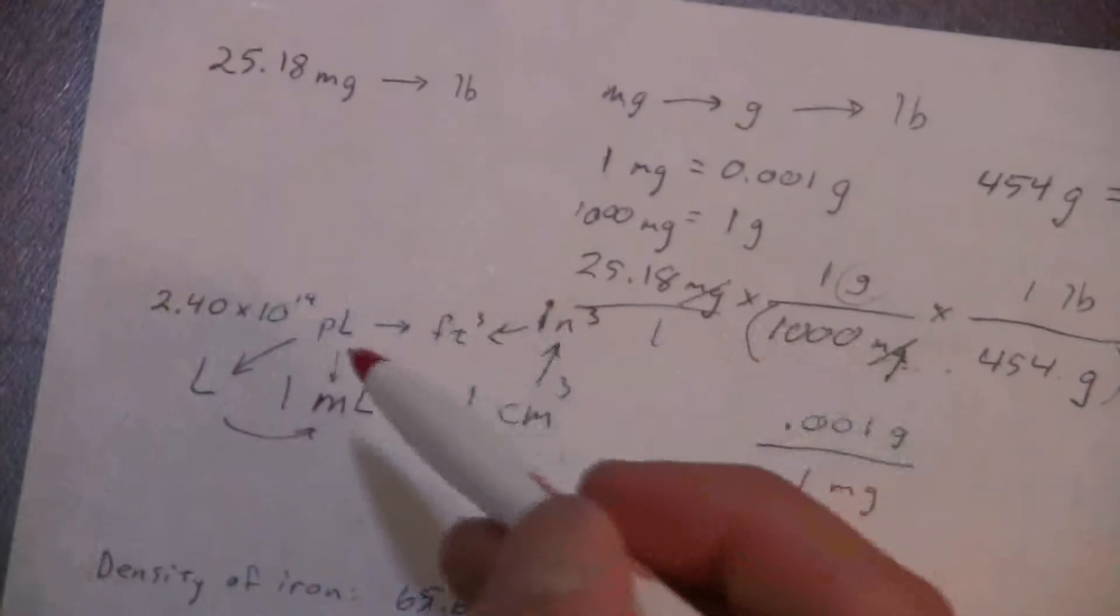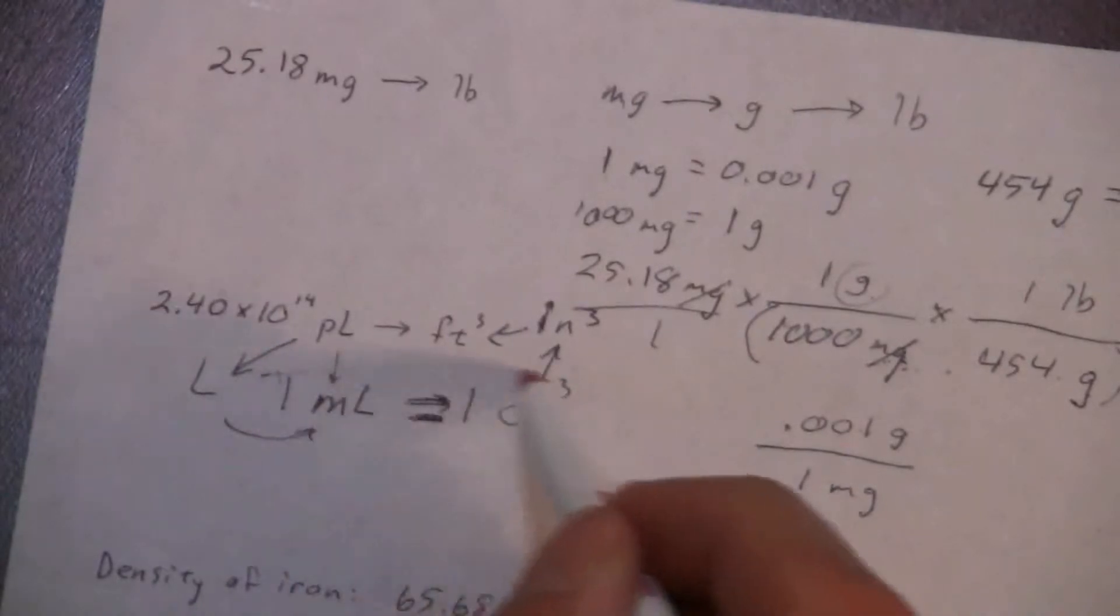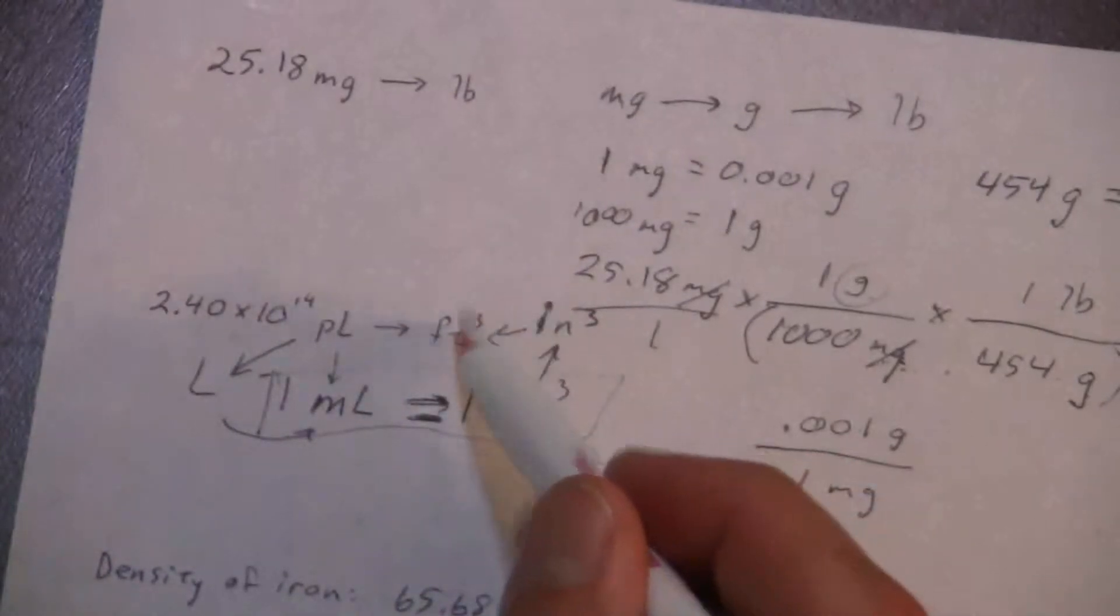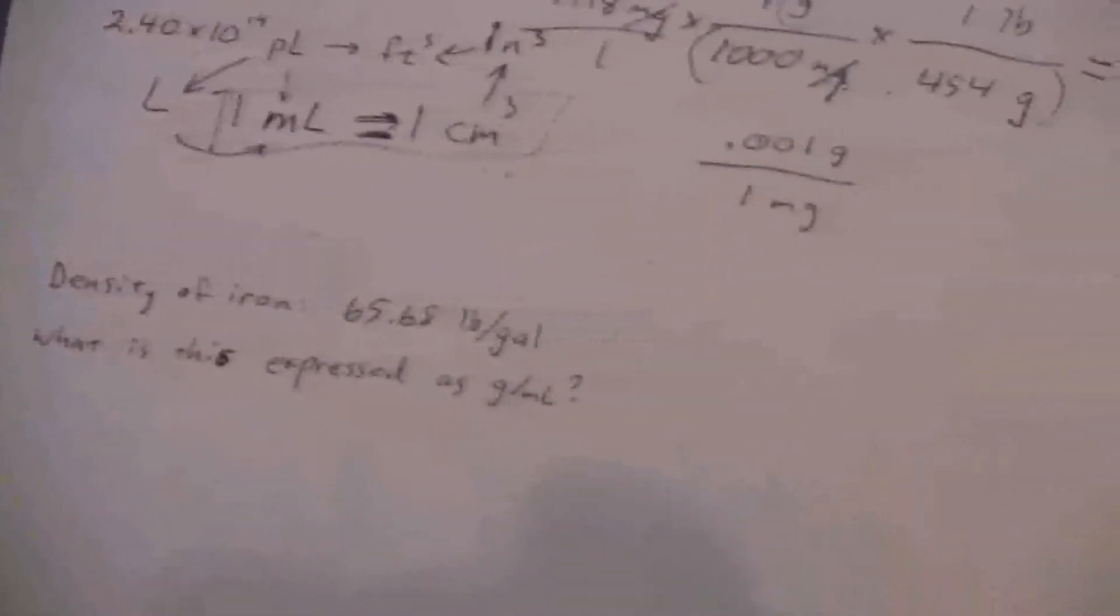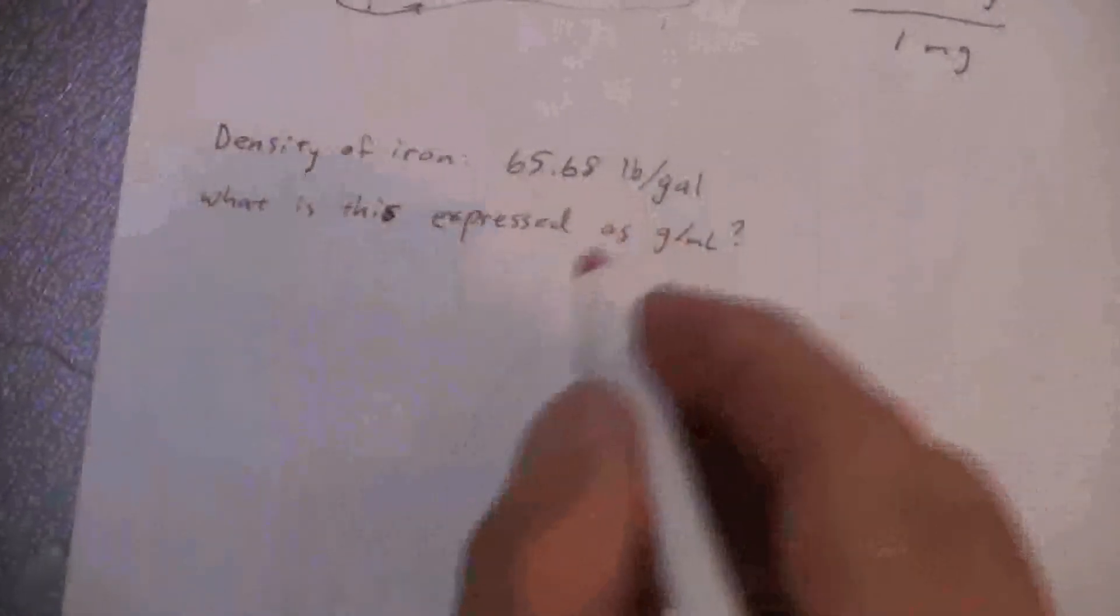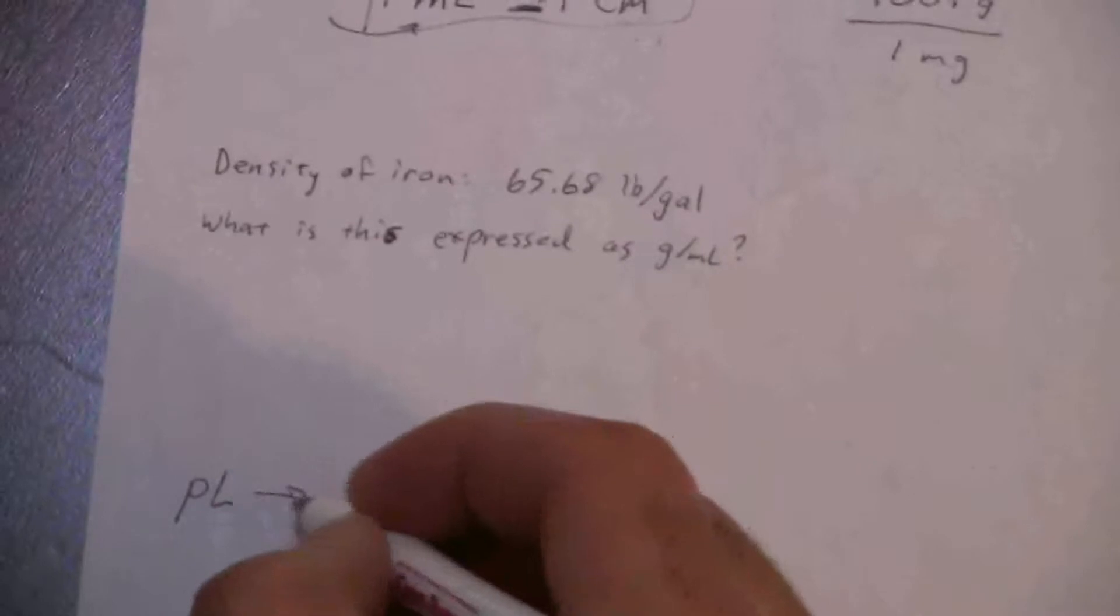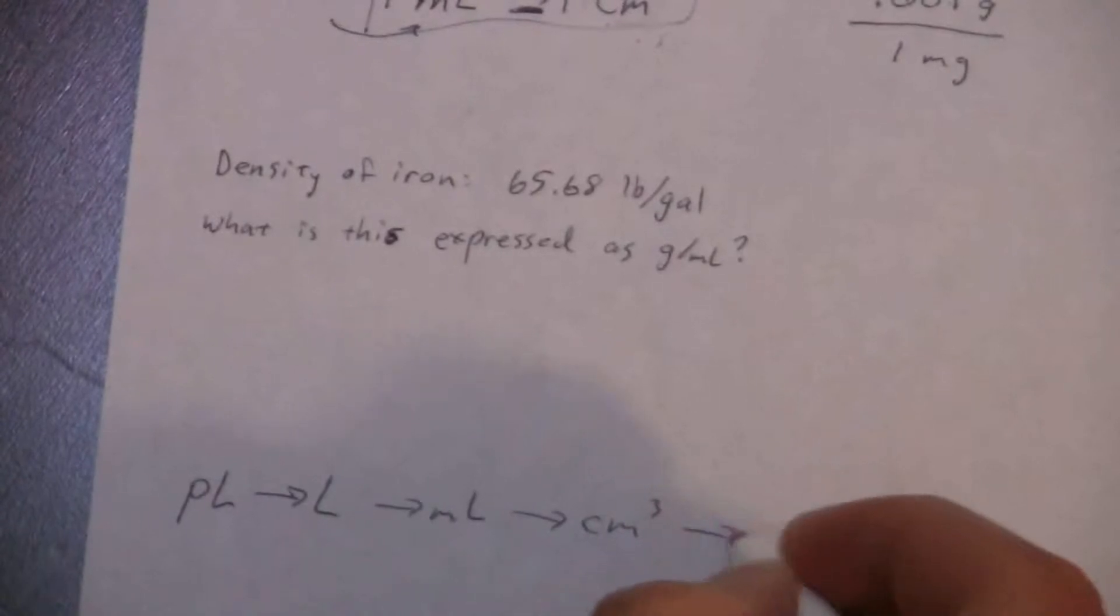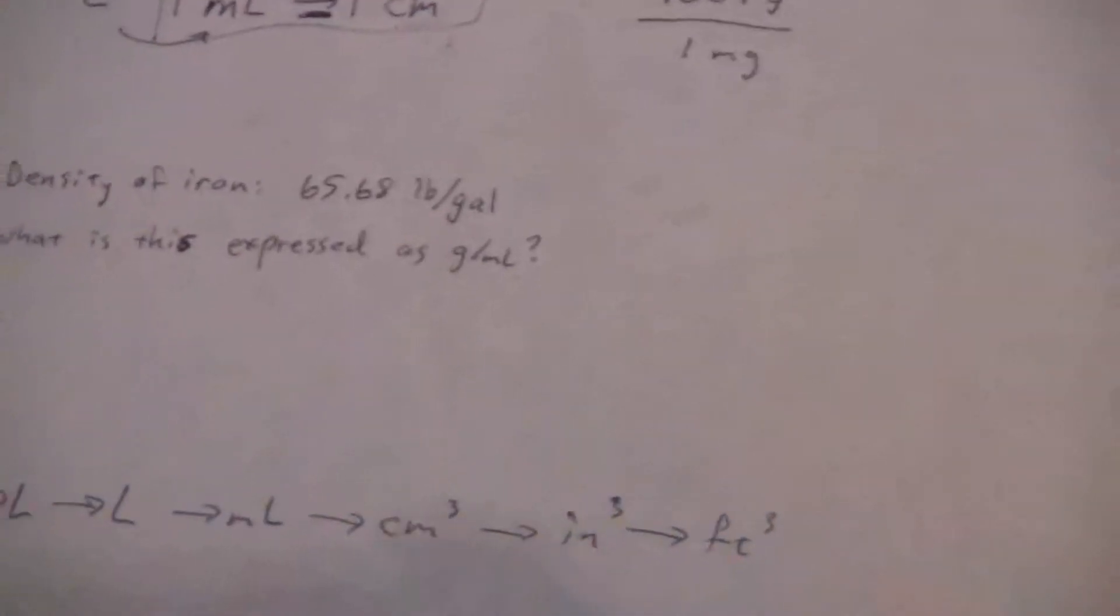We're going to go from picoliters to liters to milliliters to cubic centimeters to cubic inches to cubic feet. That's the process. Now we just need to find a conversion factor for each one of those steps, and this is my conversion factor for that step there. It's just one-to-one, they're the same thing. But I have another conversion factor, another conversion factor. So let's go ahead and write out my conversion factors here. I'm going to leave a little space so I have room to do that problem. So let me write it like this: Picoliters to liters to milliliters to cubic centimeters to cubic inches to cubic feet.